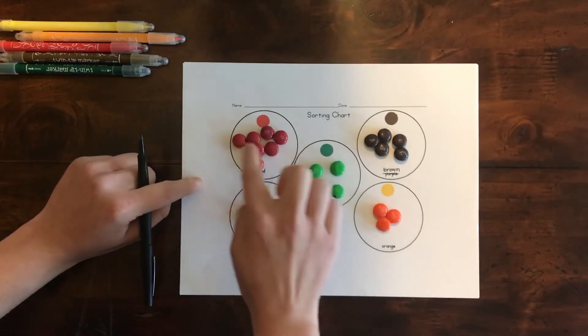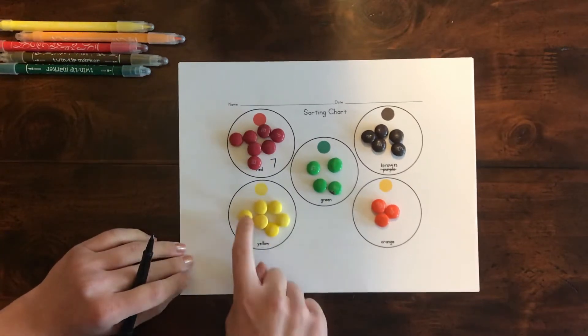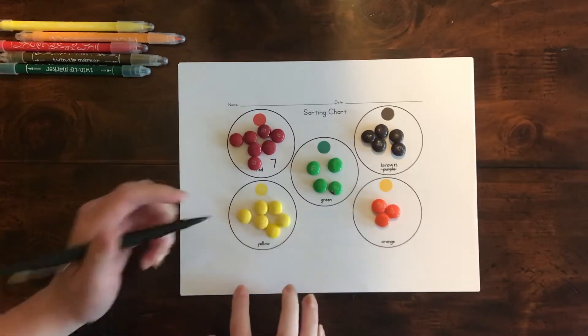One, two, three, four, five, six, seven red. Then let's count the yellow. One, two, three, four, five, six yellow.